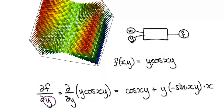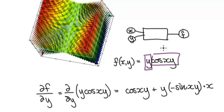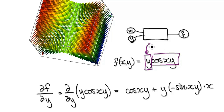So y is our variable and we've got to treat x as a constant. Here we've got one block multiplying another block. Remember, y is a variable and x is a constant. This block here contains y and this block here also contains y, so we've got to use the product rule.